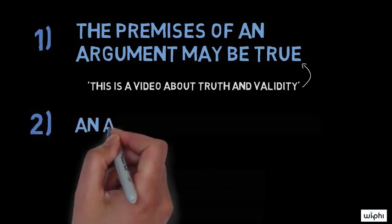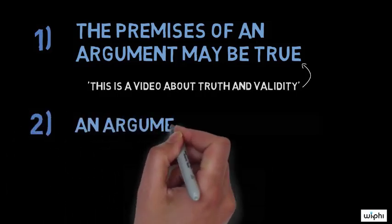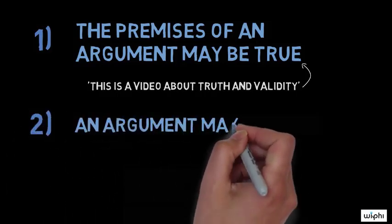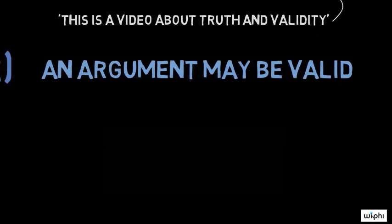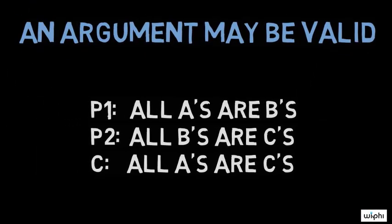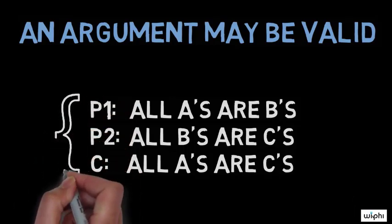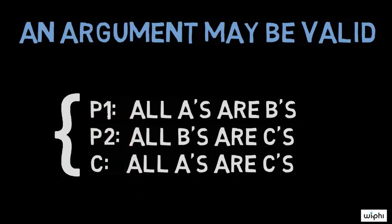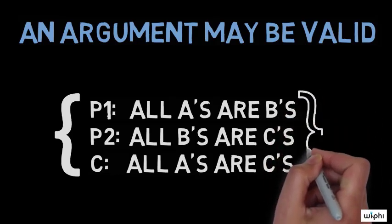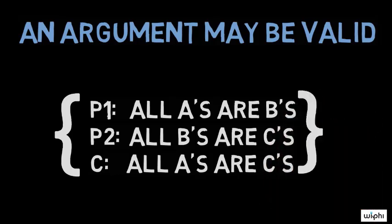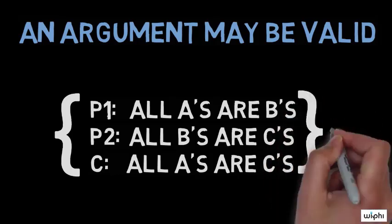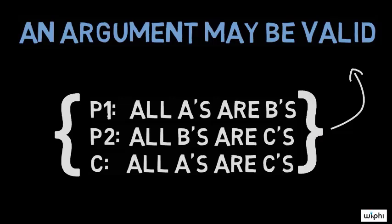Second, an argument may be valid. An argument is valid when its conclusion follows logically from its premises. In other words, an argument is valid just in case the truth of its premises guarantees the truth of its conclusion. In philosophy, validity and invalidity are held to be properties of arguments, but not statements.